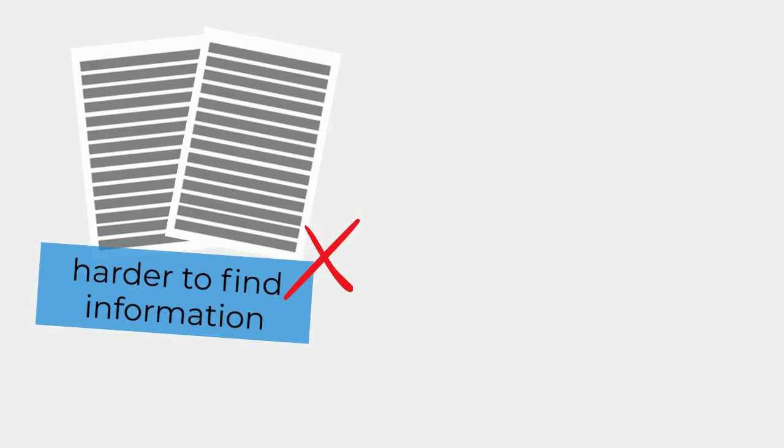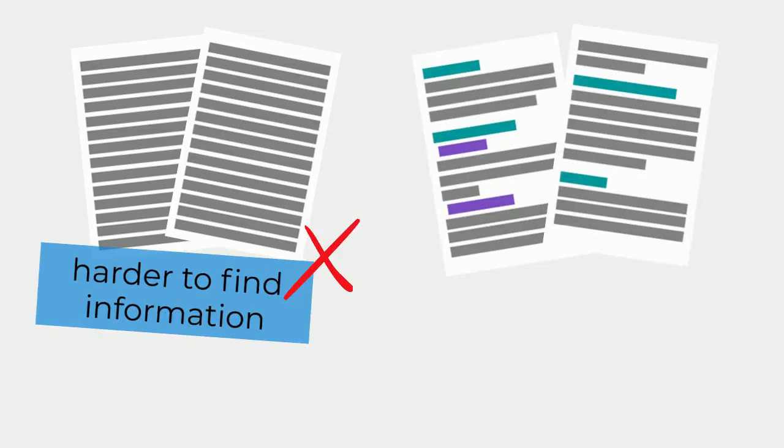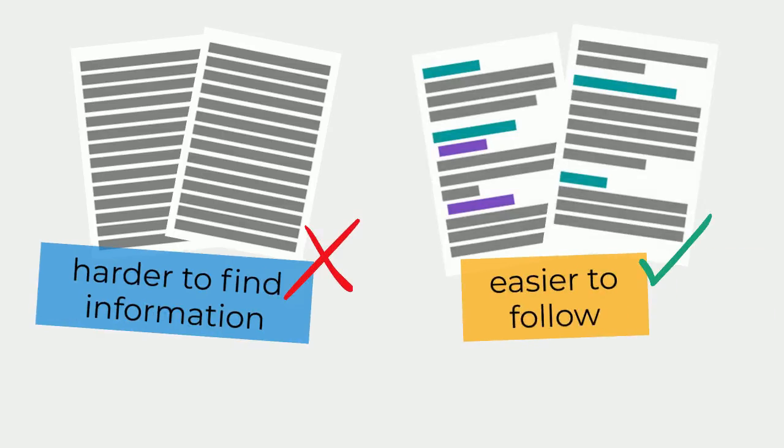Writing the method in one continuous block of text makes it harder to identify key information about how you did your research. But if we use sections and headings, it's much easier to follow the method and find the information we need.